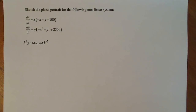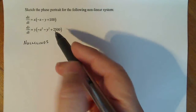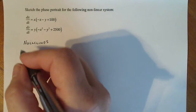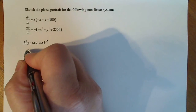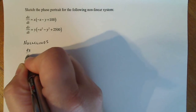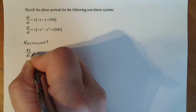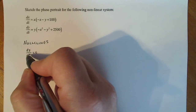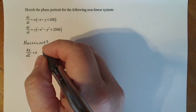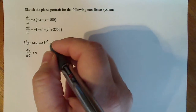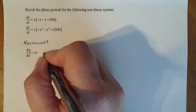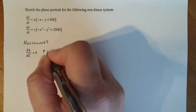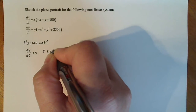Instead of drawing an entire slope field, we draw just small numbers of slopes to give us a guide. When I do this, I take notes and make sure I know how this is going to work. If dx/dt equals zero in a vector, that means these are going to be vertical slope marks along whatever these nullclines turn out to be.